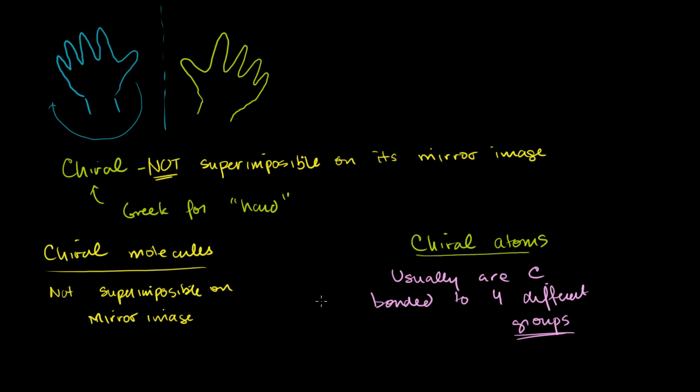And I want to emphasize groups, not just four different atoms. And to highlight a molecule that contains a chiral atom or chiral carbon, we can just think of one. So let's say that I have a carbon right here. And I'm going to set this up so this is actually a chiral atom, that the carbon is a chiral atom. But it's part of a chiral molecule.